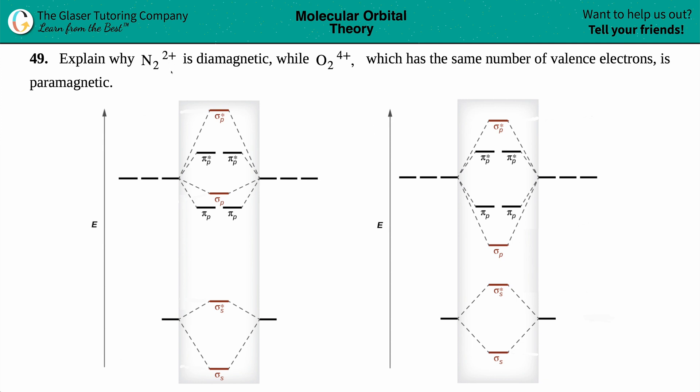Number 49, explain why N2²⁺ is diamagnetic while O2⁴⁺, which has the same number of valence electrons, is paramagnetic.